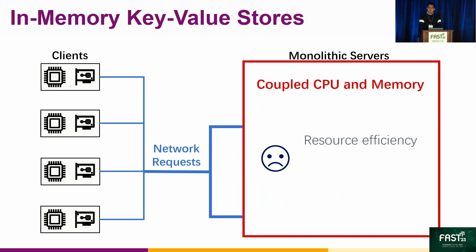However, due to the adoption of monolithic servers, the CPU and memory resources are coupled on a single machine, and hence existing in-memory KV stores suffer from the resource inefficiency and elasticity issue inherited from the monolithic server architecture.